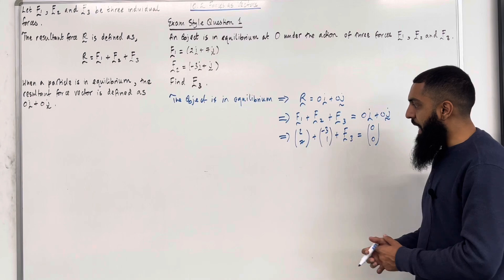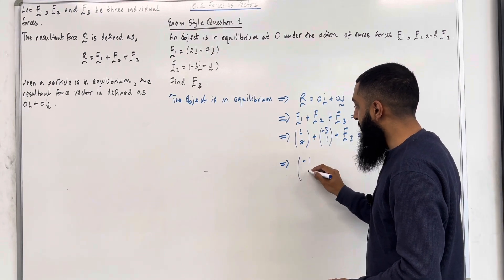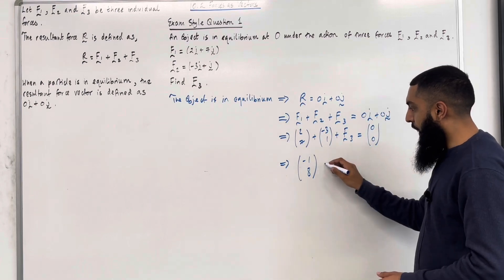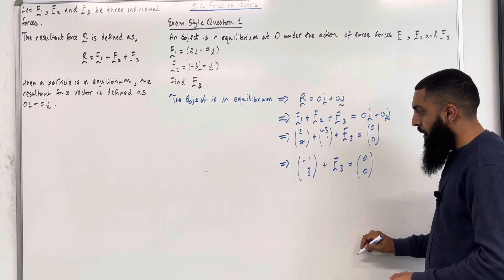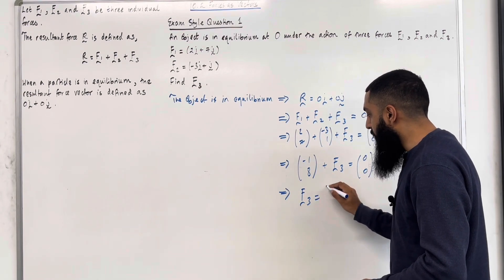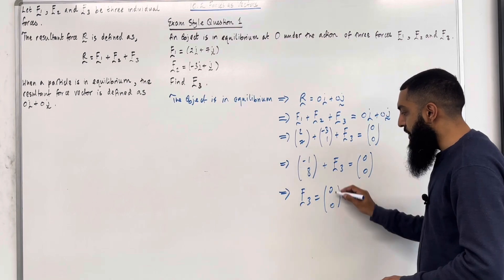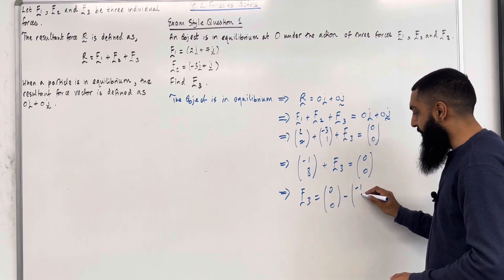Now if I add these two column vectors, I get minus 1 and 8 plus F3 is equal to 0i plus 0j. As a column vector this is 0, 0. So if I rearrange, I get F3 is equal to 0, 0 take away the column vector minus 1, 8.